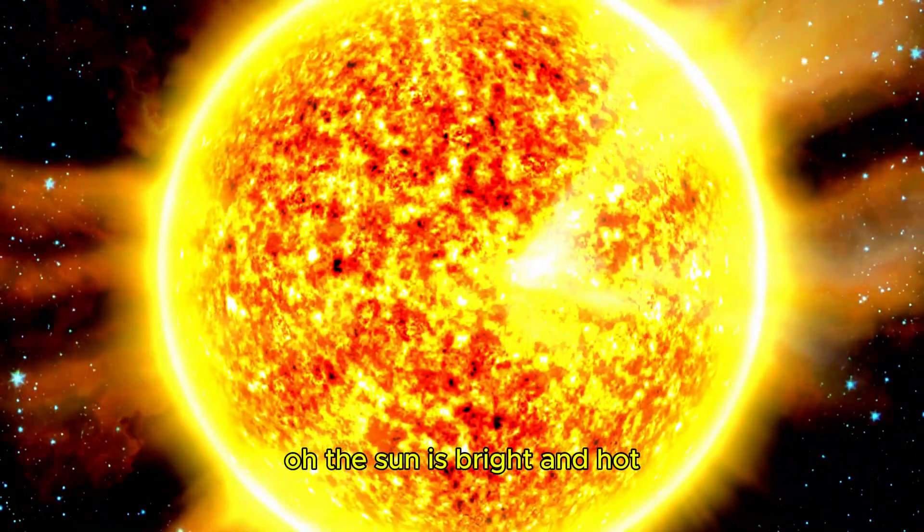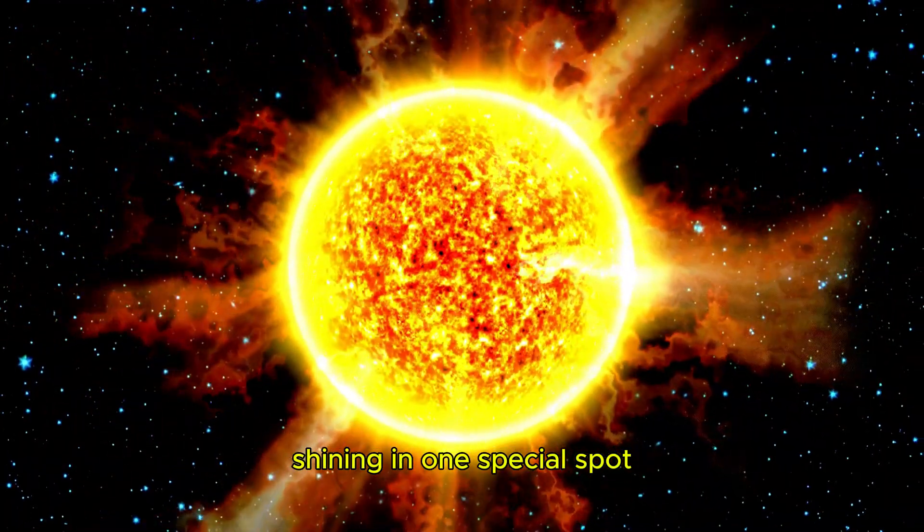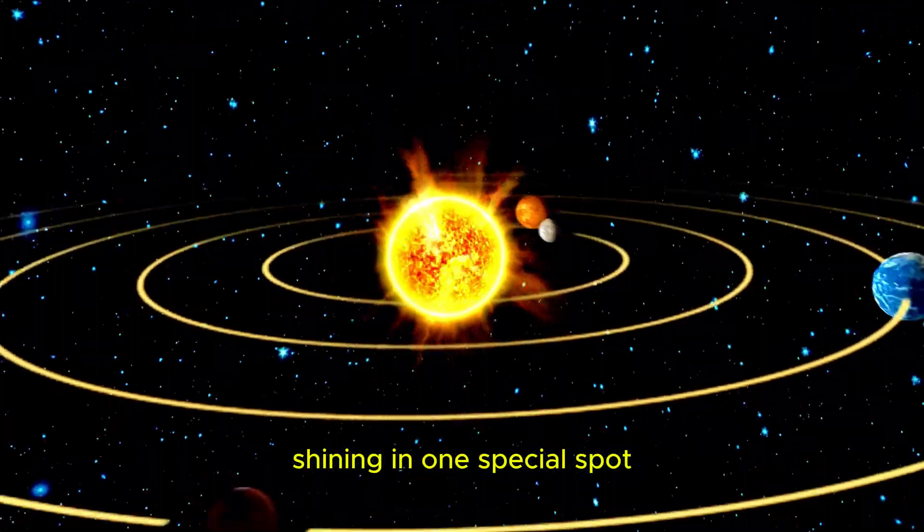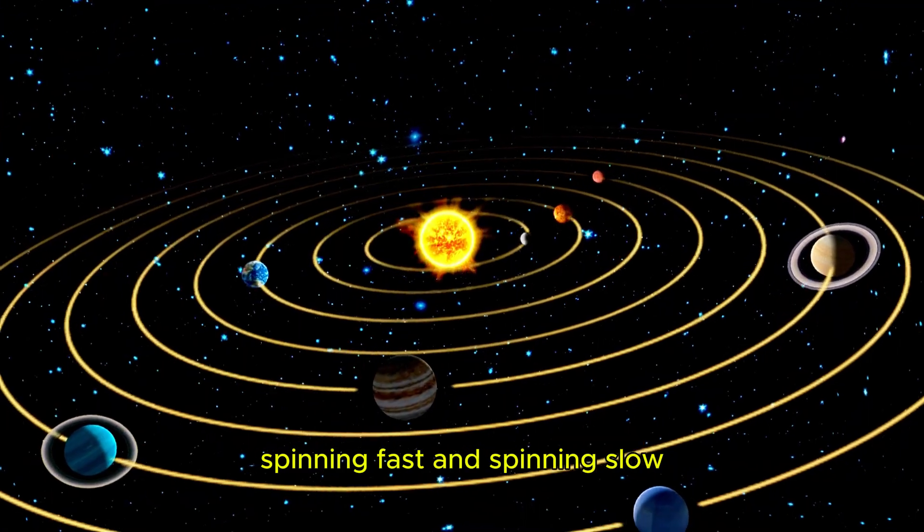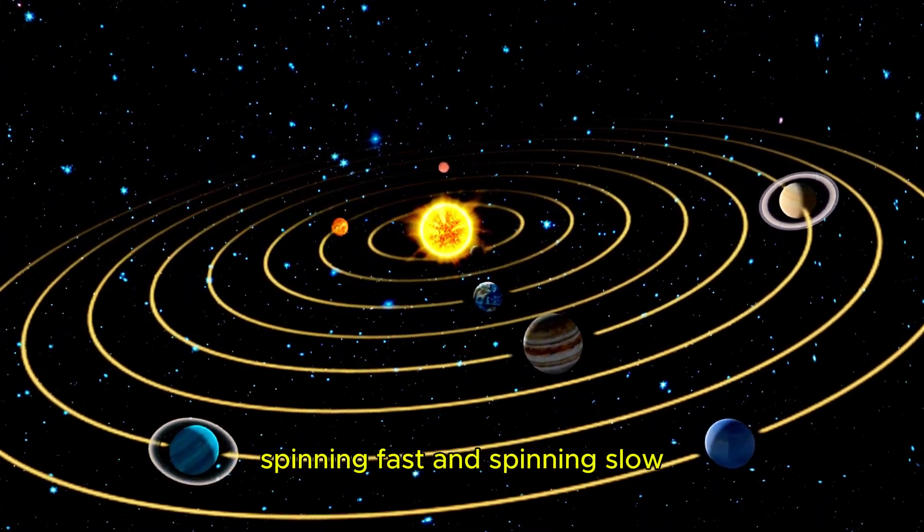The sun is bright and hot, shining in one special spot. Round and round the planets go, spinning fast and spinning slow.